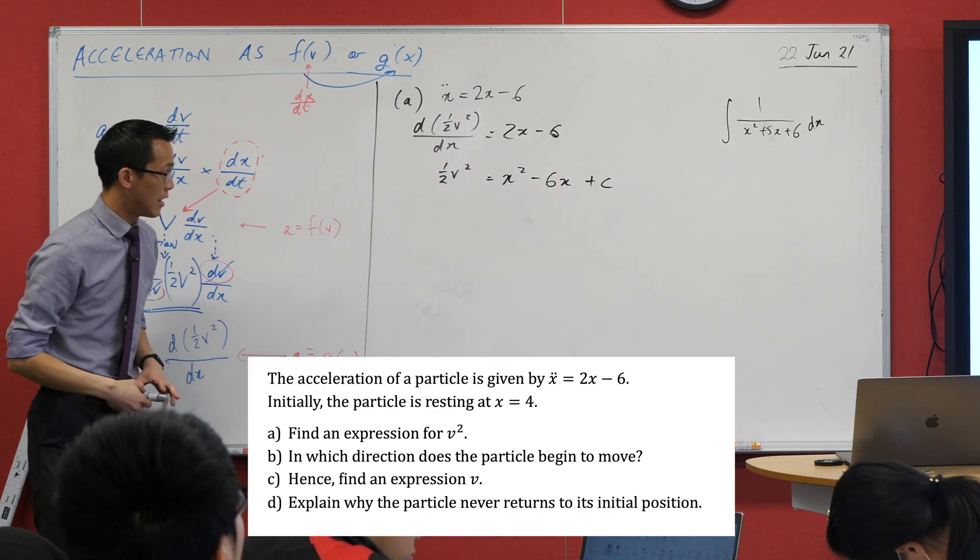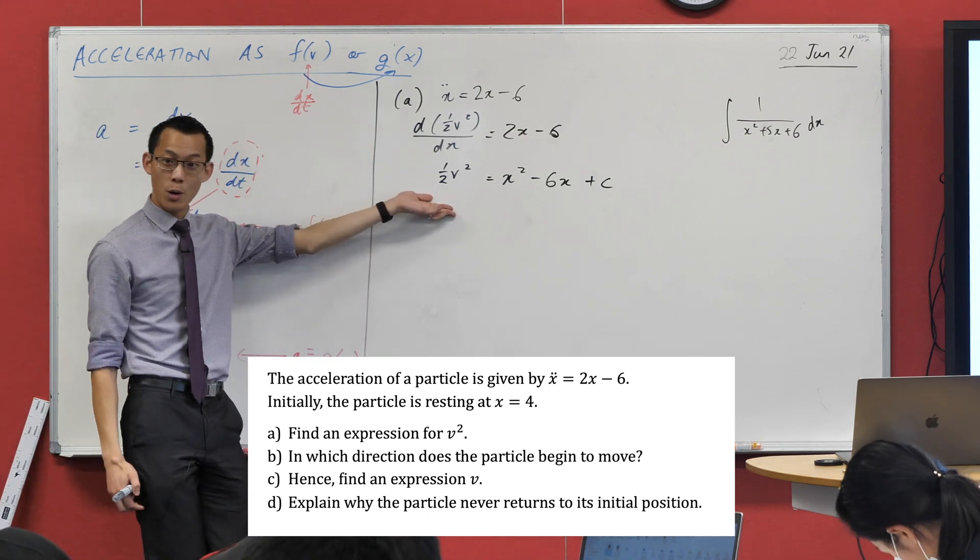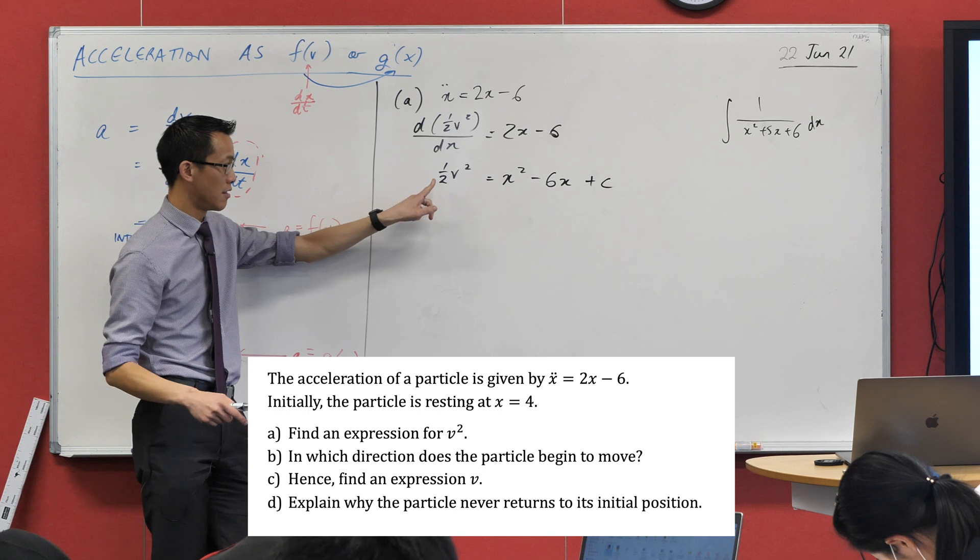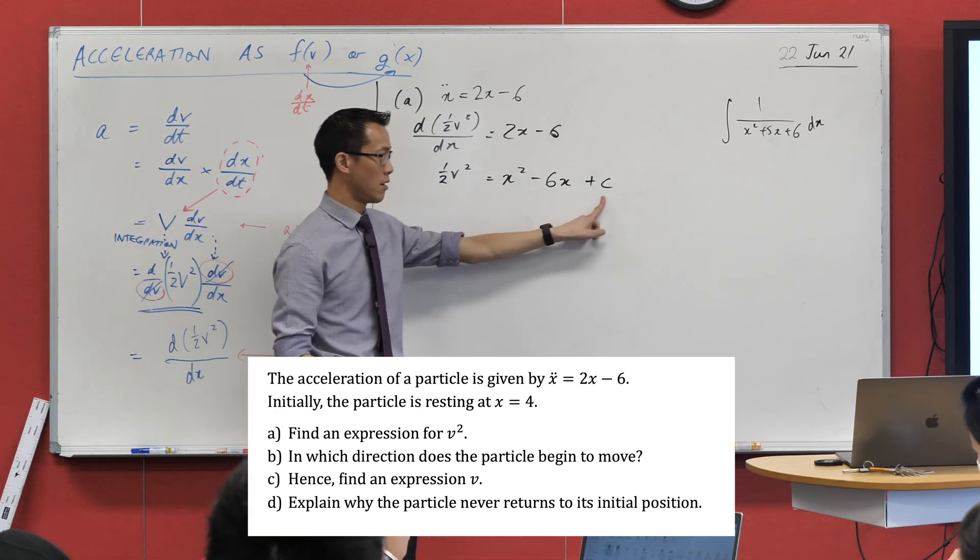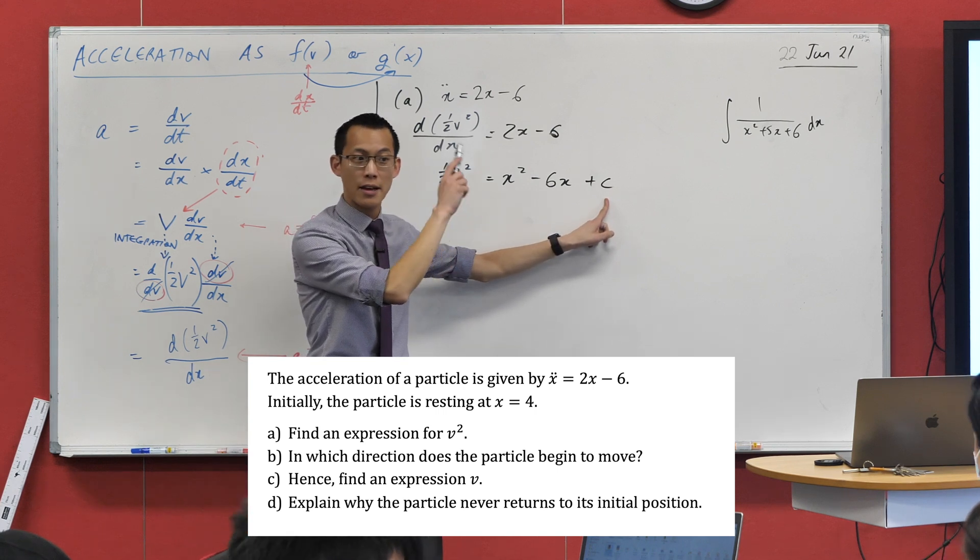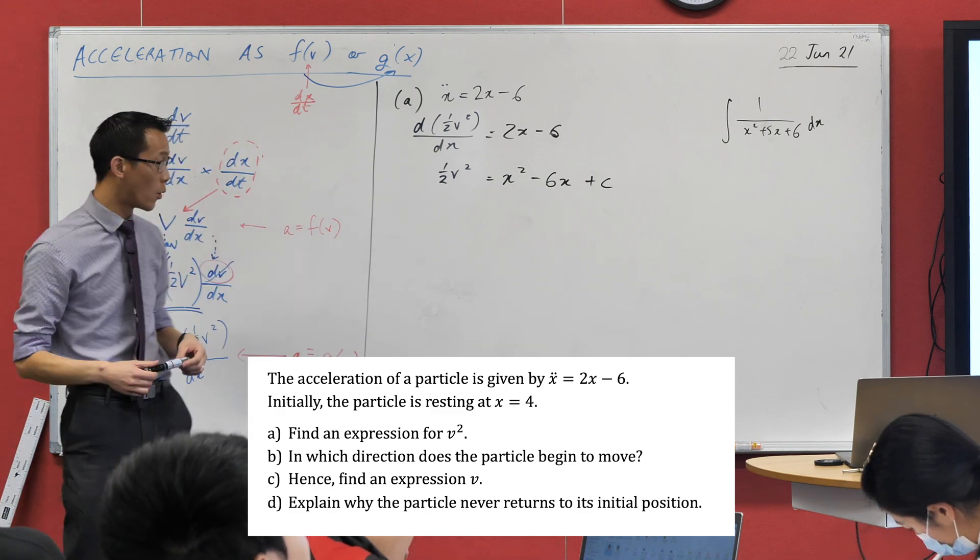This is looking pretty good, right? Because they asked me for an expression for v squared, and I'm almost there. Just two minus snags. That half there, which is not really much of a snag at all. This one's more significant, though. I've got this constant of integration. Better work out what that is.